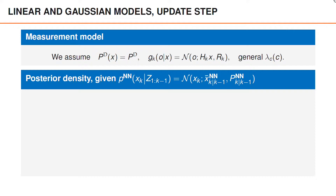Once we have introduced the approximations, we perceive them as if they are the true densities. Given that the predicted density is Gaussian, the posterior density is a Gaussian mixture with one term for every possible association at time k.